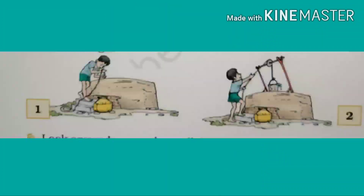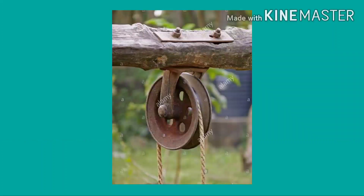Look at the pictures here. In picture one, a boy is lifting water without a pulley, and in picture two, a boy is lifting water with the help of a pulley. Whose work is easier? Yes, the work of the second boy. So anything which makes our work easier is called a simple machine. Therefore, we can say that a pulley is also a simple machine.